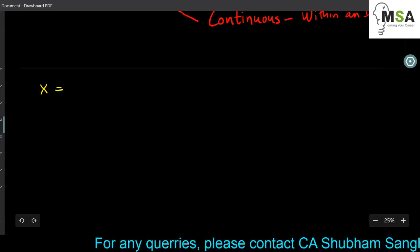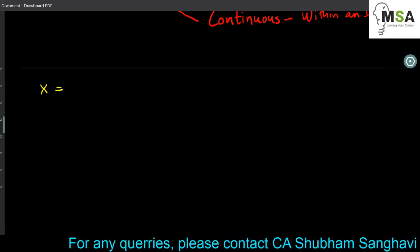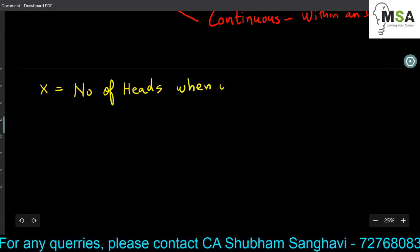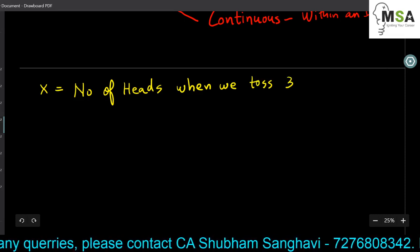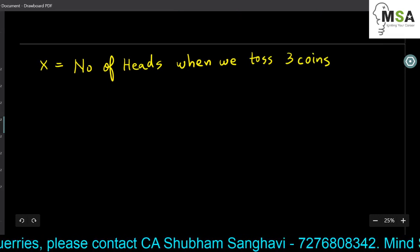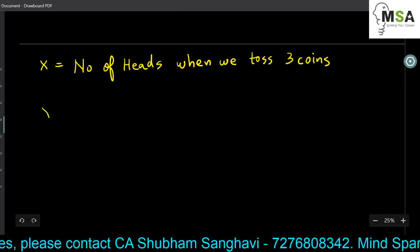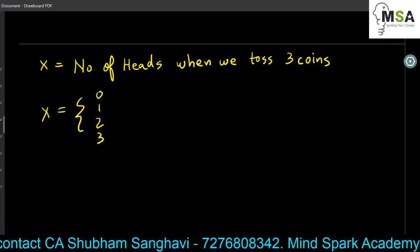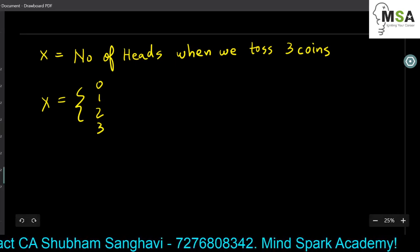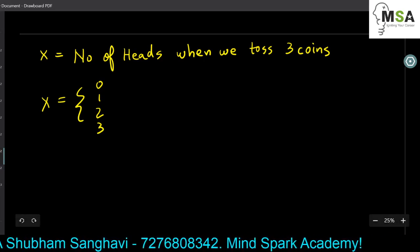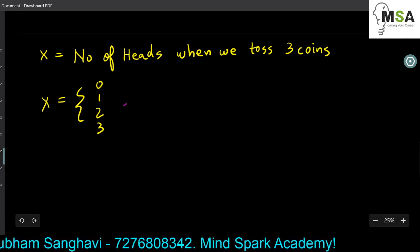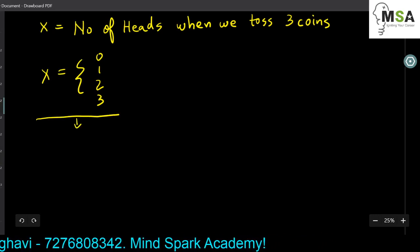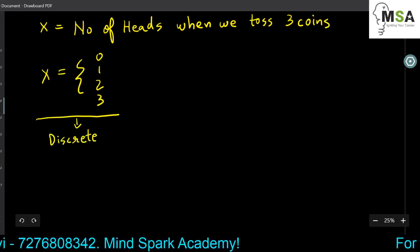Let X be a random variable — the example from the previous video: number of heads when we toss three coins. The different values X can assume are 0, 1, 2, or 3. We can count these different values. Whenever we can count the different values a random variable can assume, it is known as a discrete random variable.